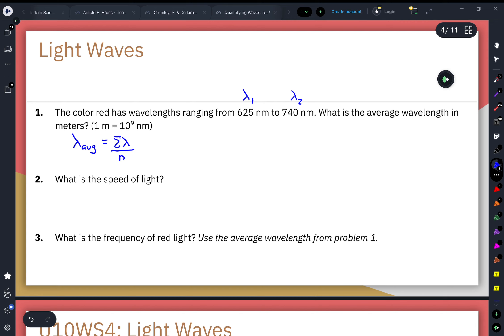So our lower range is 625 nanometers plus the upper range which is 740 nanometers, and then we'll divide that by 2. Adding that together gives us 1365 nanometers over 2.